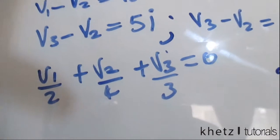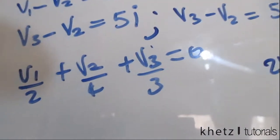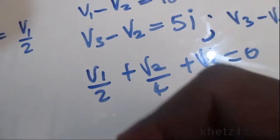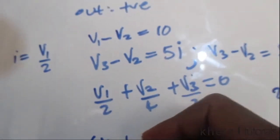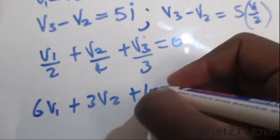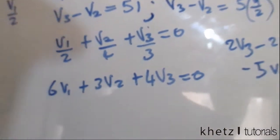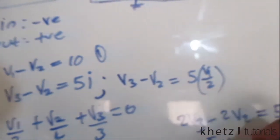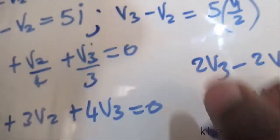For the third equation, we multiply V1/2 + V2/4 + V3/3 = 0 through by 12, giving 6V1 plus 3V2 plus 4V3 equals 0. So we now have our three simplified equations ready to solve.